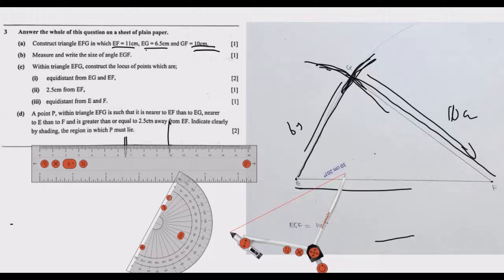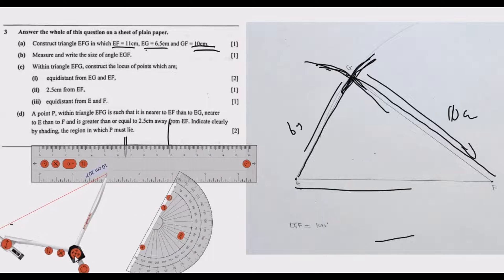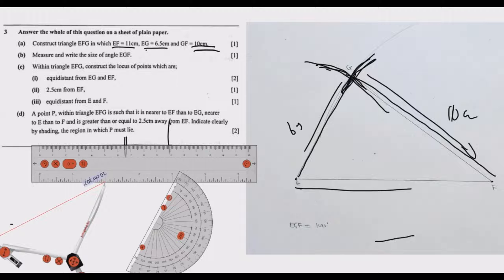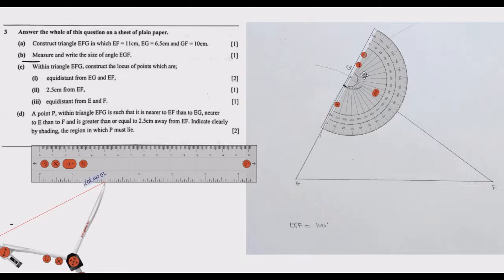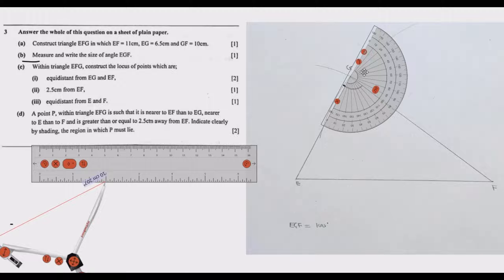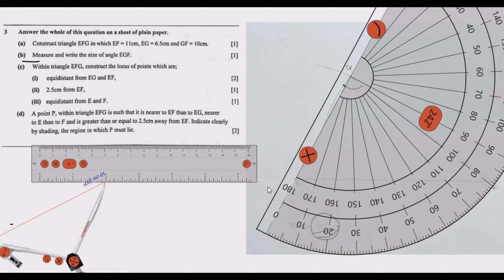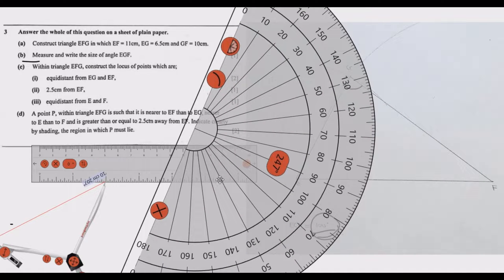Use your ruler to draw lines from the intersection point to complete the triangle. That gives you the triangle you are looking for — that's how you answer part A. For part B, measure the size of angle EGF using a protractor. Place it carefully at G and you can see that the angle is approximately 100 degrees, which is exactly 100 degrees. That's how you get the marks for parts A and B.